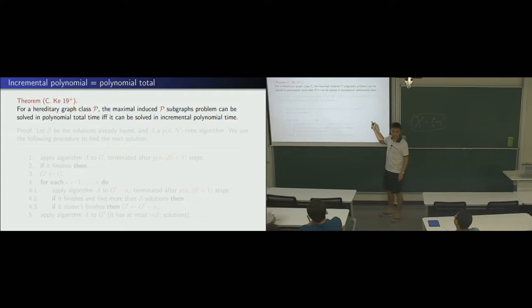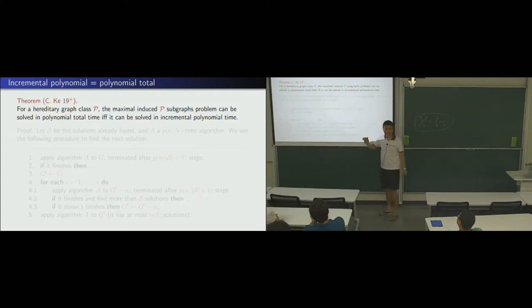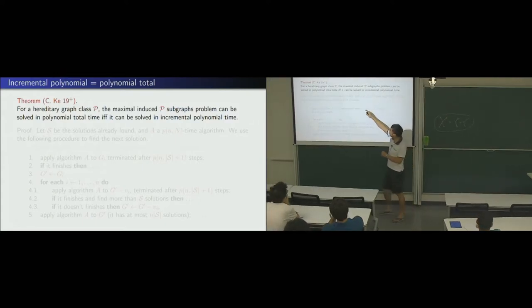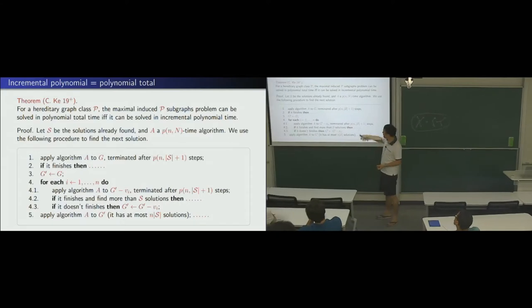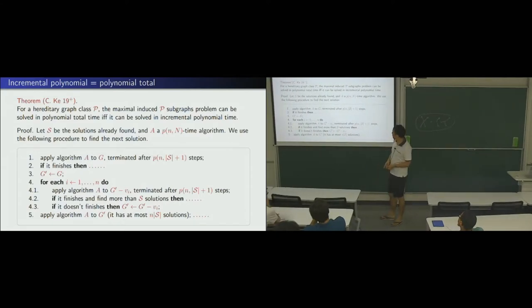So, our problem is harder. So, that result does not imply this, but this result implies that. So, hypergraph can be done in incremental polynomial if and only if it can be solved this time. So, our result implies that one, but not the other way. So, this is the simple proof. Maybe, okay, I can briefly explain that.